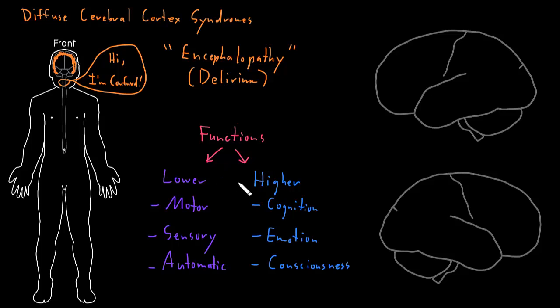And one of the reasons I like to kind of divide up the functions of the nervous system in this way is because some of these syndromes, like these diffuse cerebral cortical syndromes, will often affect the higher functions of the nervous system, and in particular cognition, but also often emotion and consciousness, while sparing the lower functions.